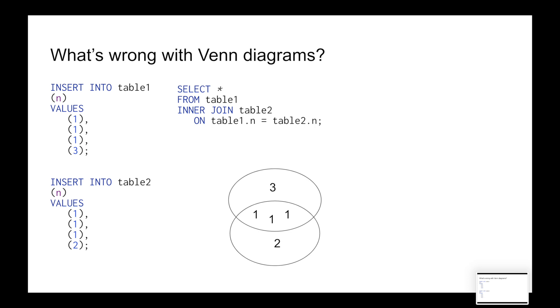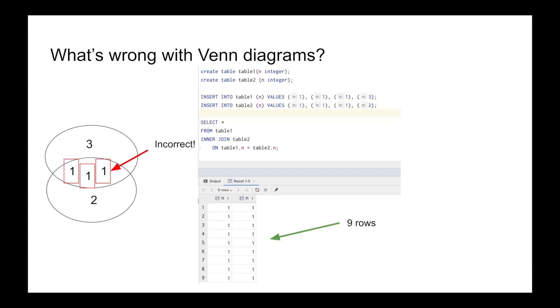then it may seem that the result will be three common rows: 1, 1, 1. However, in fact, there will be as many as 9 of them. But why?